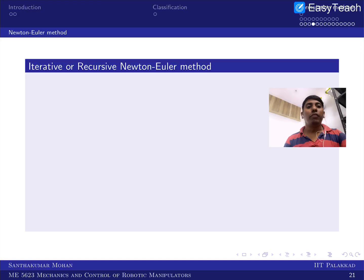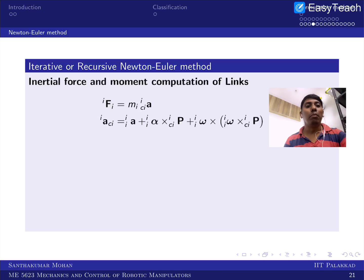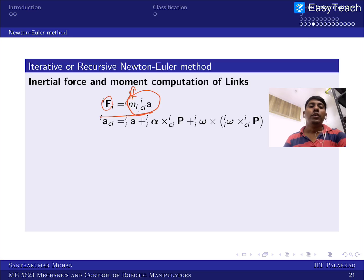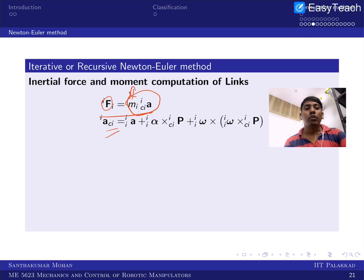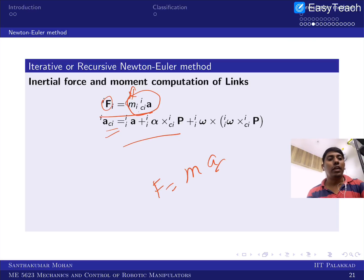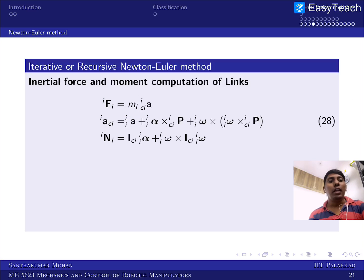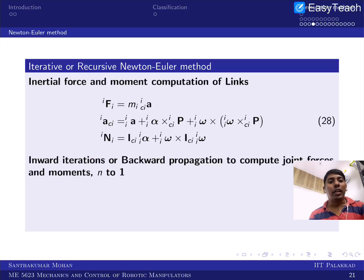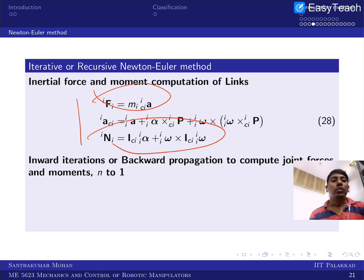Having completed the outward iteration to obtain joint velocities and accelerations for both rotary and prismatic joints, we can now find the link inertial force and moment. The link inertial force is F = m·a_c, where a_c is the centroidal acceleration. Similarly we calculate the link moment. This completes the forward propagation of link forces and moments.